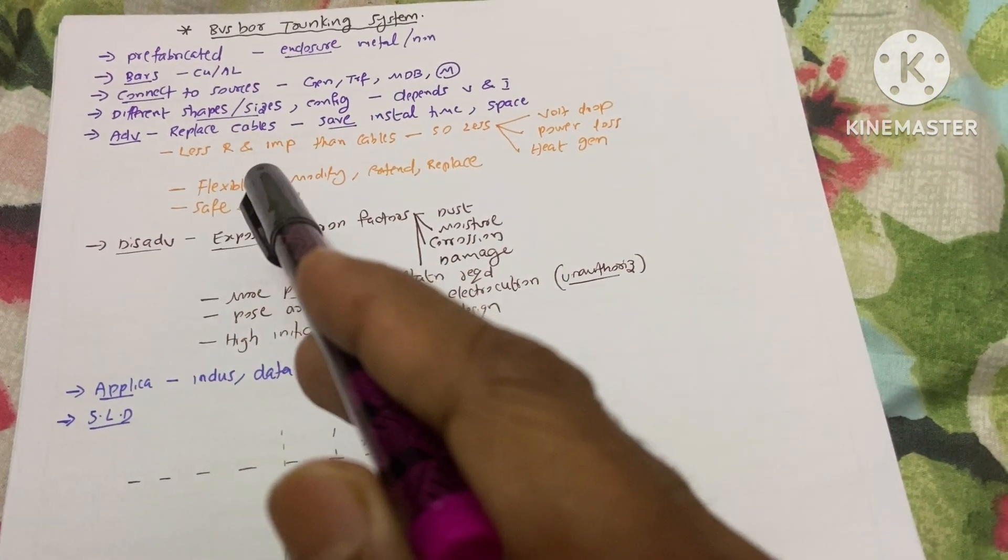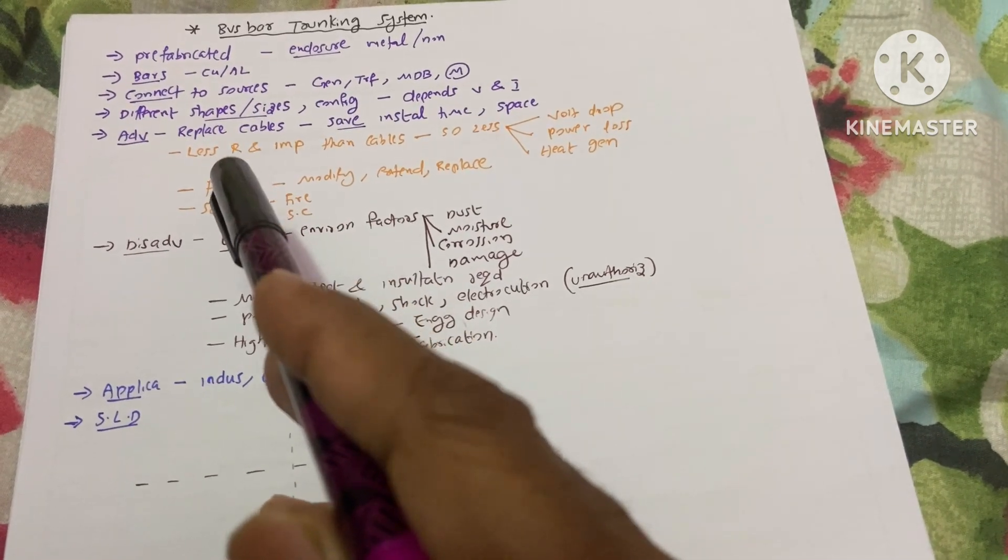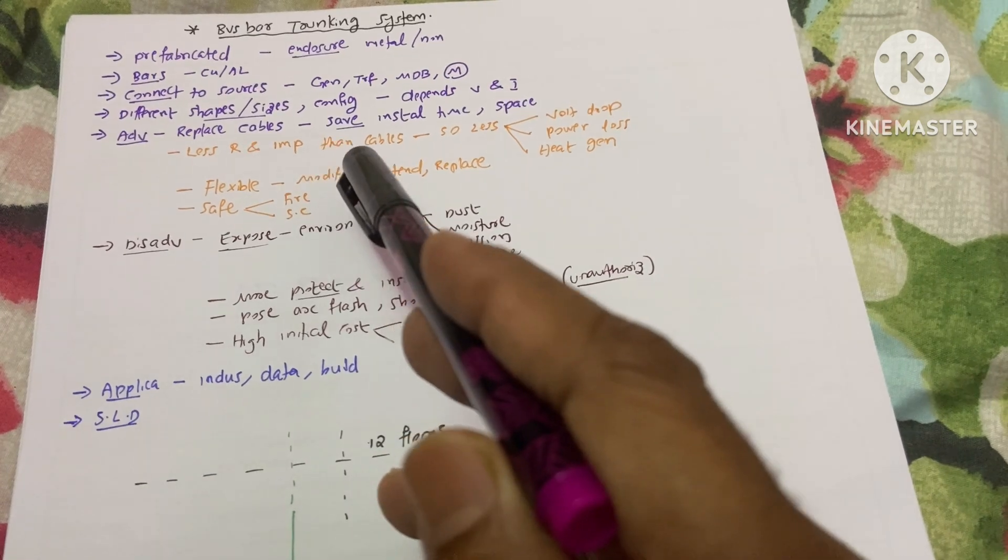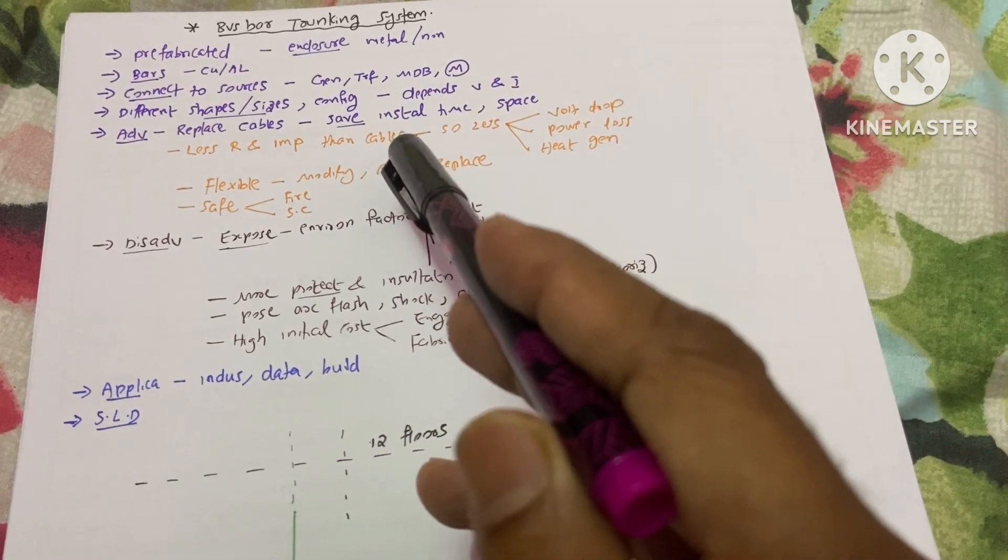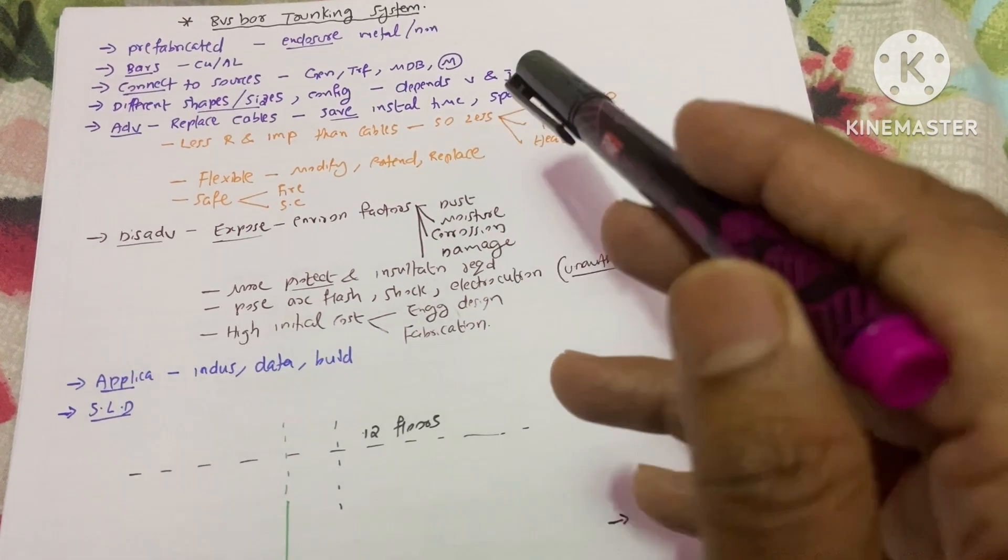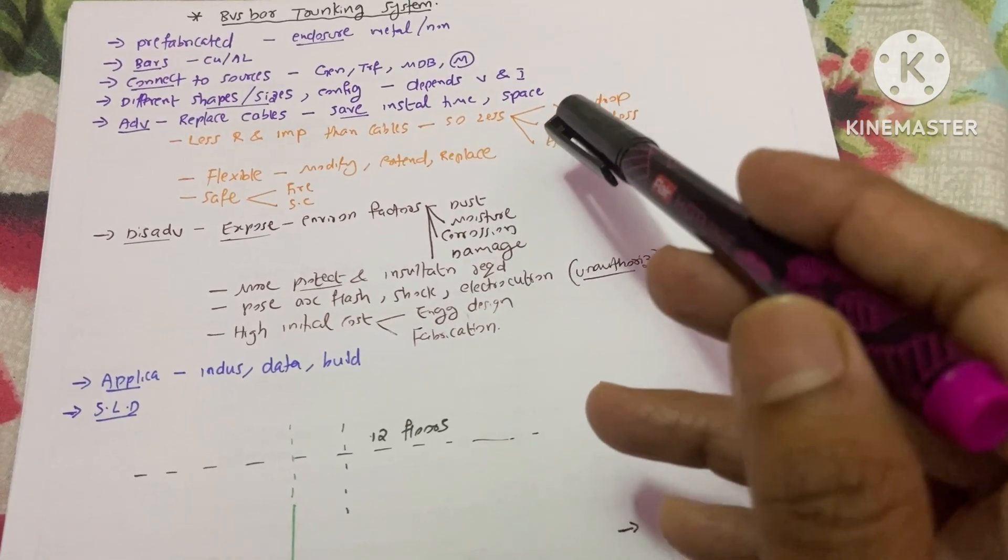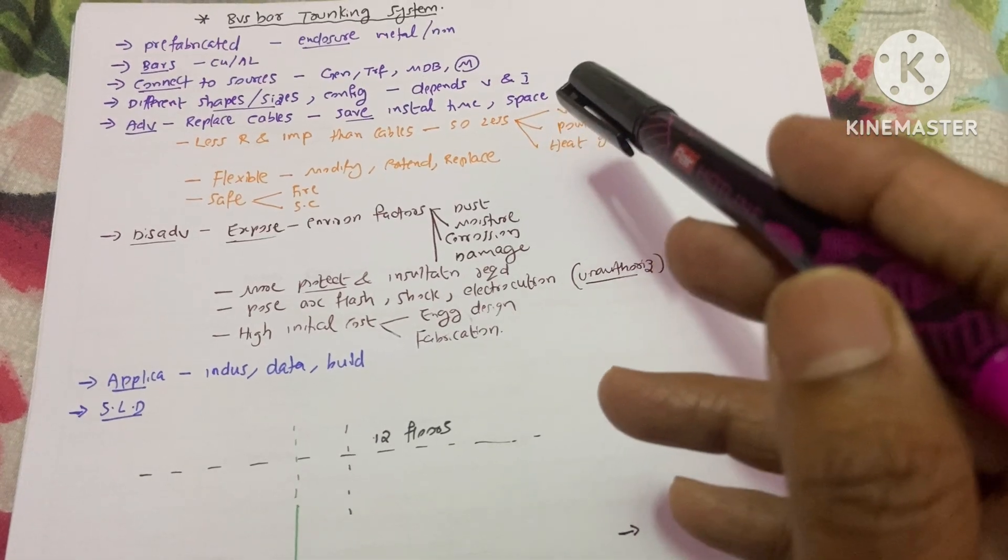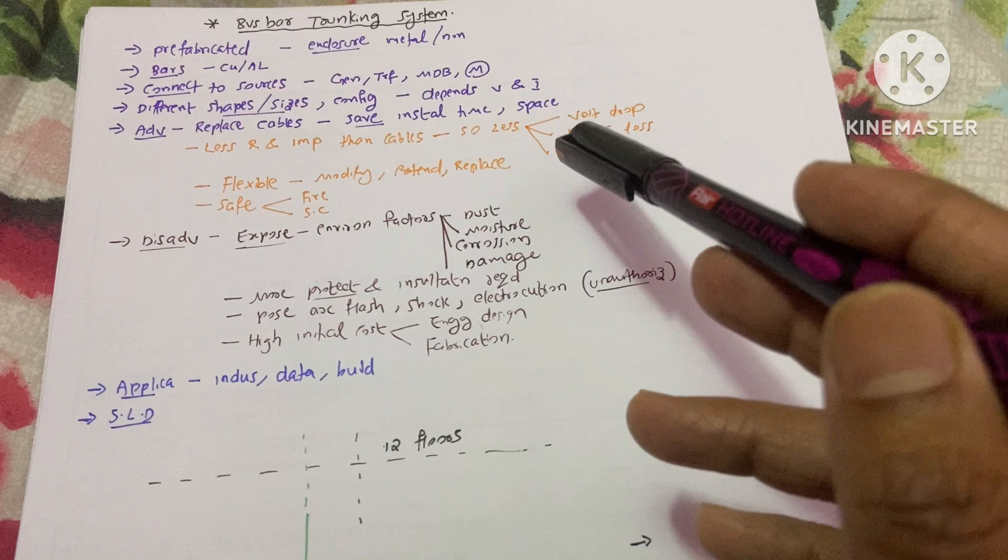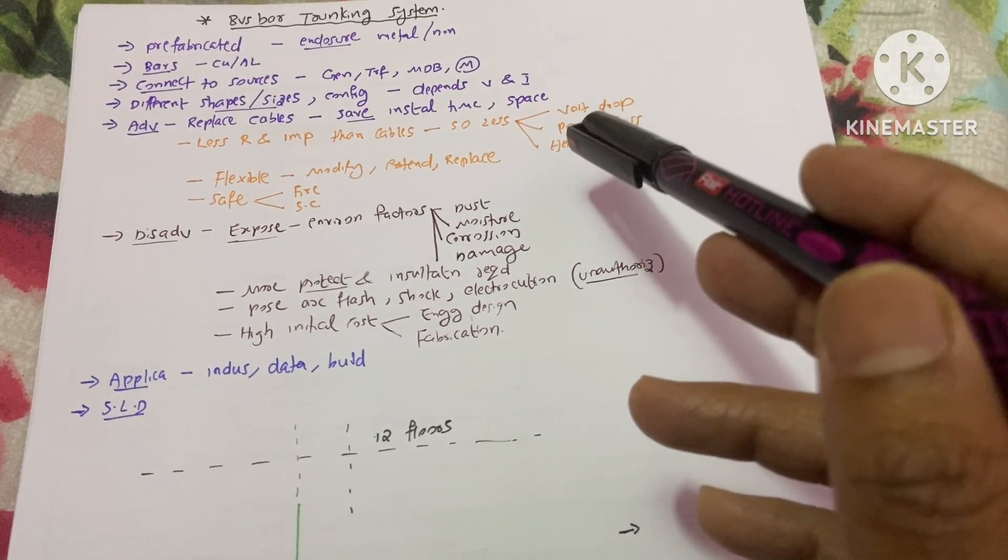Some advantages of the bus bar trunking system: The main advantage is we can replace cables. Through that, we can save installation time and also space. We know that already—if you use cables for your entire electrical system, you need to install cable trays, and enormous space is required.